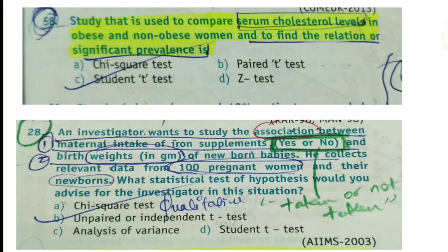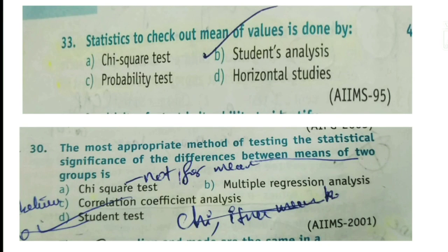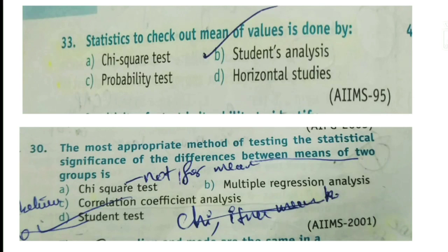Statistics to check the mean of values is done by Student's t-test — as I showed in my first slide, the three uses: testing significance of the mean of a sample, comparing two means via paired or unpaired t-test, and the correlation coefficient. Question 30: 'The most appropriate method of testing the statistical significance of the difference between means of two groups is?' The answer is Student's t-test. It cannot be chi-square test because chi-square is for qualitative data, not for comparing means. Thank you — please like, share, comment, and subscribe if you found this helpful.